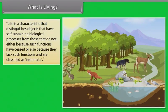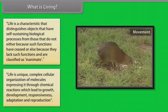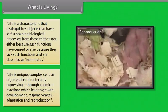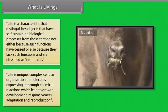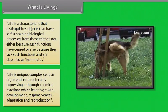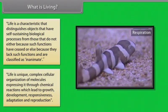Life is a characteristic that distinguishes objects that have self-sustaining biological processes from those that do not, either because such functions have ceased or else because they lack such functions and are classified as inanimate. Life is unique complex cellular organization of molecules expressing it through chemical reactions which lead to growth, development, responsiveness, adaptation, and reproduction.